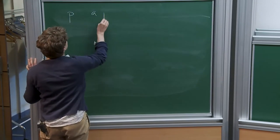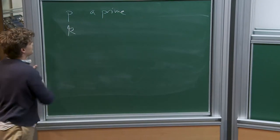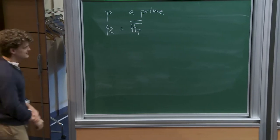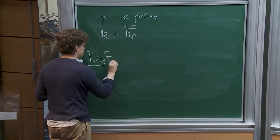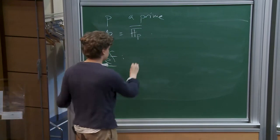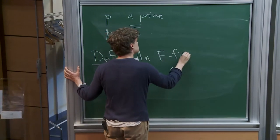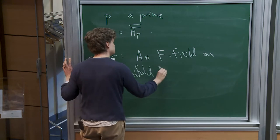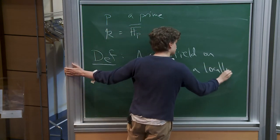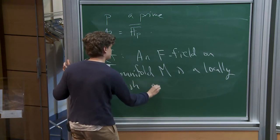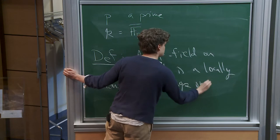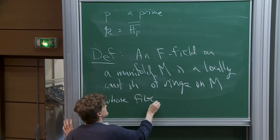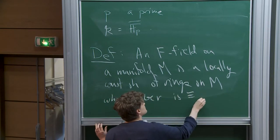In the talk, P will be a prime number, and K will be the algebraic closure of the field with P elements. The talk is about the following definition. An F-field on a manifold is a locally constant sheaf of rings whose fiber is isomorphic to K.